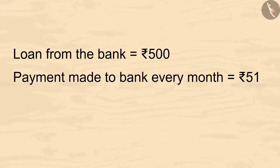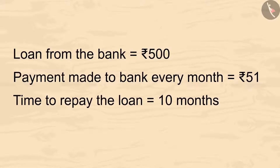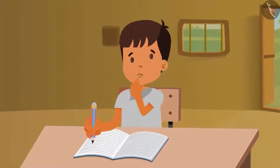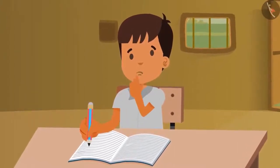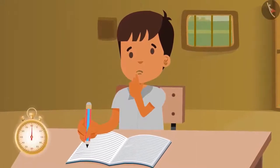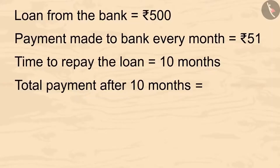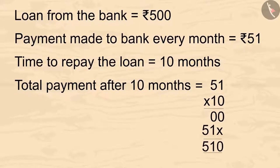Vimal told his father that within 10 months he will repay all the money to the bank. Kids, can you tell how much total money Vimal has to pay back to the bank? You can calculate this by pausing the video. We can calculate it like this: 51 multiplied by 10 gives 510. Vimal will pay 510 rupees to the bank in 10 months.